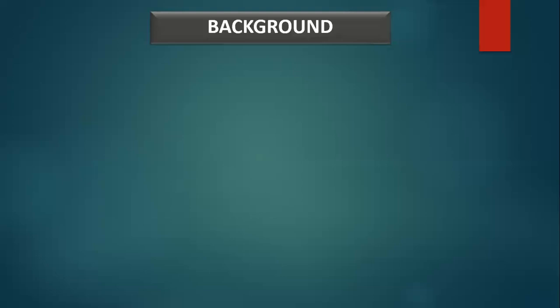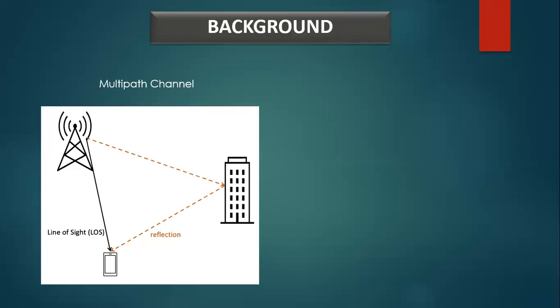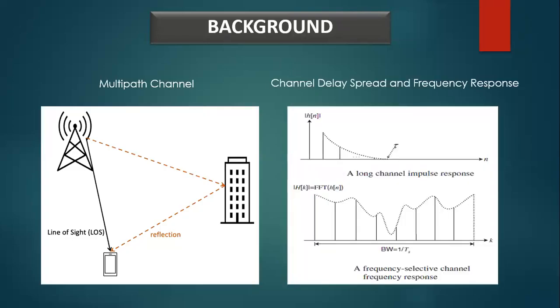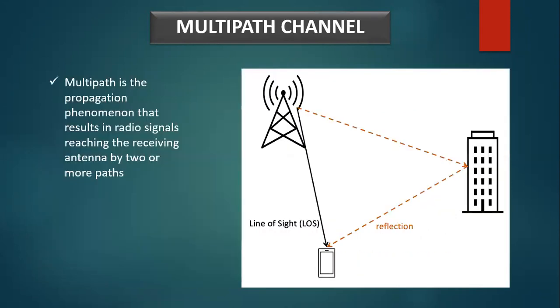Before moving on to the actual concept of OFDM, as background knowledge, I would like to explain the multipath channel and the channel delay spread, which is the channel impulse response and its corresponding frequency response. In wireless communication, multipath is the propagation phenomenon that results in radio signals reaching the receiver antenna by two or more paths, as shown in the figure.